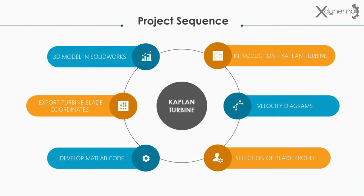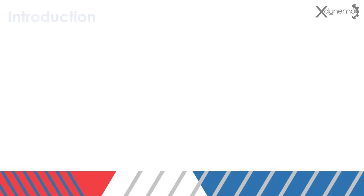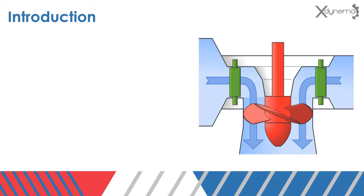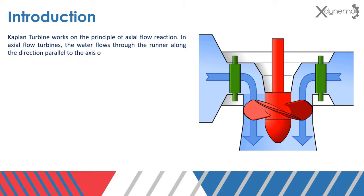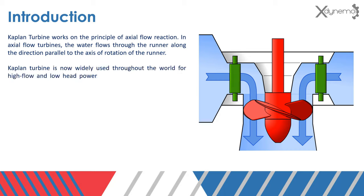Let's dive into this project. Introduction. Kaplan turbine works on the principle of axial flow reaction. In axial flow turbines, the water flows through the runner along the direction parallel to the axis of rotation of the runner. Kaplan turbine is now widely used throughout the world for high flow and low head power production.